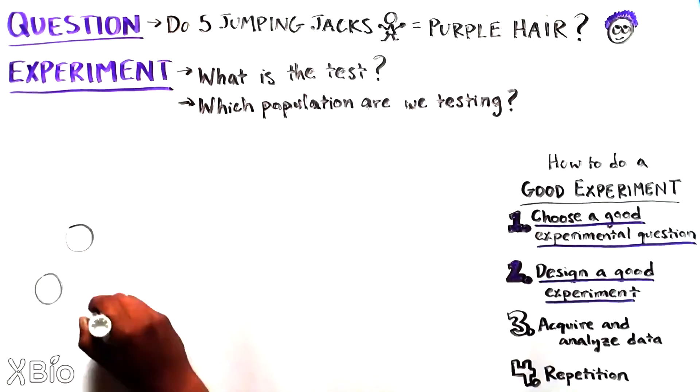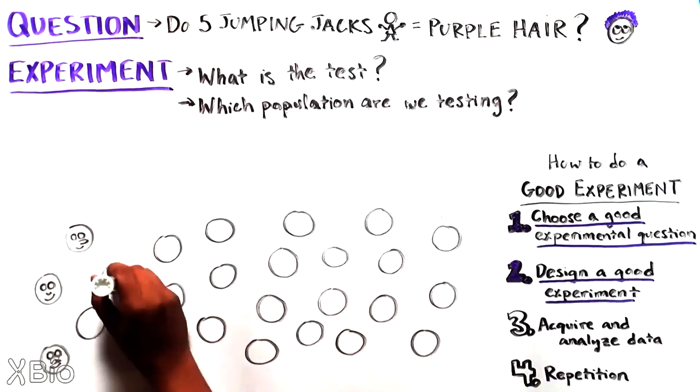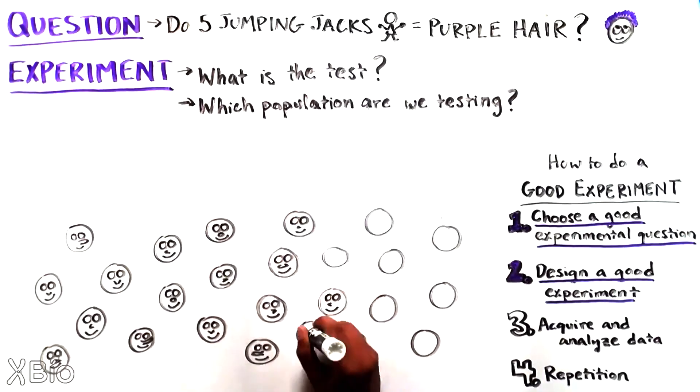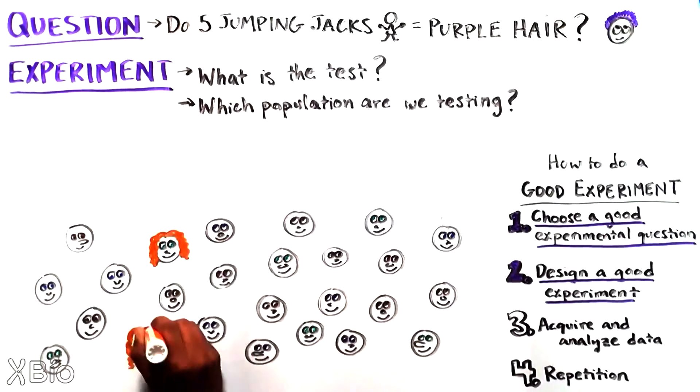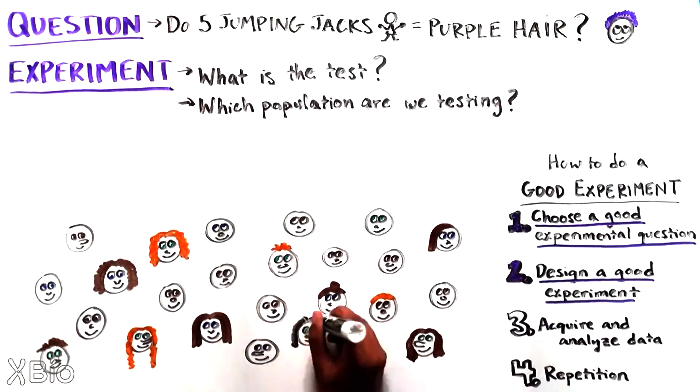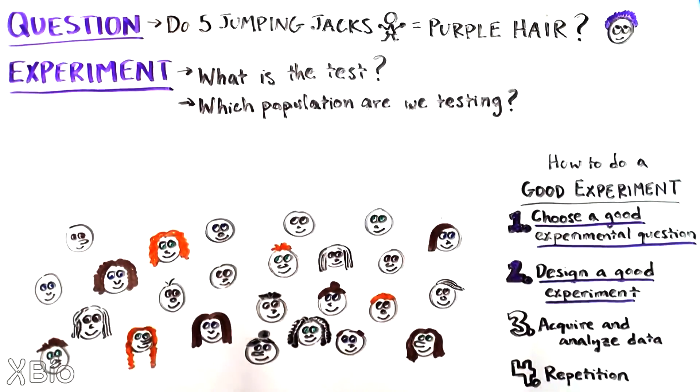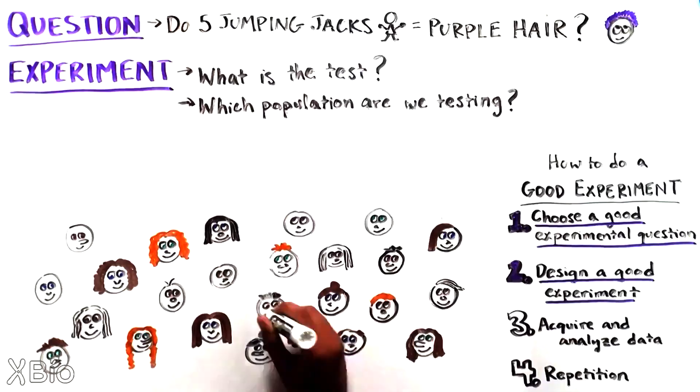We need to think about which population we're testing. It's often impossible to assess the whole population, for instance, every person in the world or every person with a specific feature you're interested in because it's too expensive and time-consuming. So instead, we assess a smaller sample.